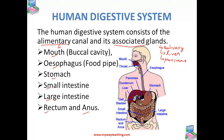Let us start by identifying each one of them in the picture given here. We can see the mouth, or the buccal cavity. It is called the buccal cavity because it is an empty space. When you open your mouth you can see some empty space, or cavity. The mouth cavity by which food is taken into the alimentary canal and chewed is called the buccal cavity.